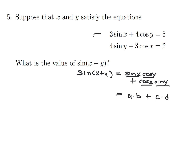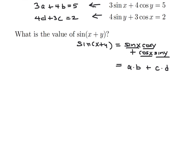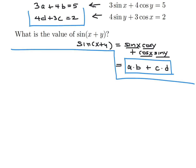So the equations become 3a + 4b = 5 and 4d + 3c = 2. To find sin(x + y) = ab + cd, I'll use some fancy algebra: square both equations. Squaring 3a + 4b = 5 gives 9a² + 24ab + 16b² = 25.